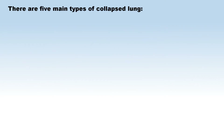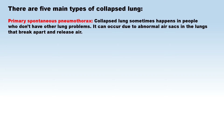There are five main types of collapsed lung. Primary spontaneous pneumothorax: a collapsed lung sometimes happens in people who don't have other lung problems. It can occur due to abnormal air sacs in the lungs that break apart and release air.